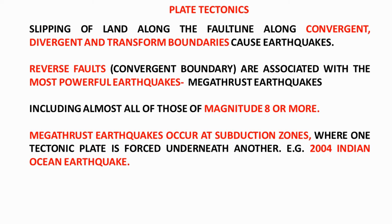Regarding plate tectonics, there are three types of plate boundaries: convergent, divergent, and transform. Most earthquakes occur at divergent boundaries where plates move away from each other. At convergent boundaries, reverse faults occur and mega-thrust earthquakes — those measuring 8 or more on the Richter scale — also occur. There are also subduction zones where one plate subducts below the other, and the energy released in this movement is felt as seismic waves.